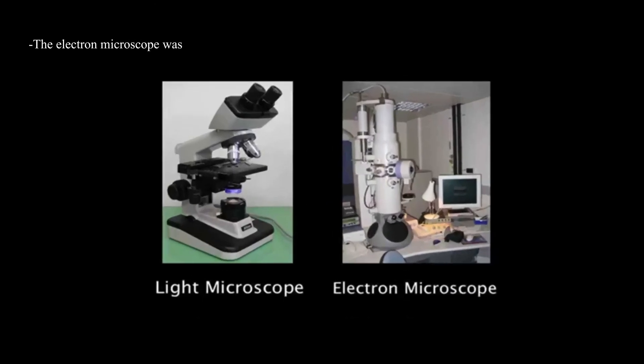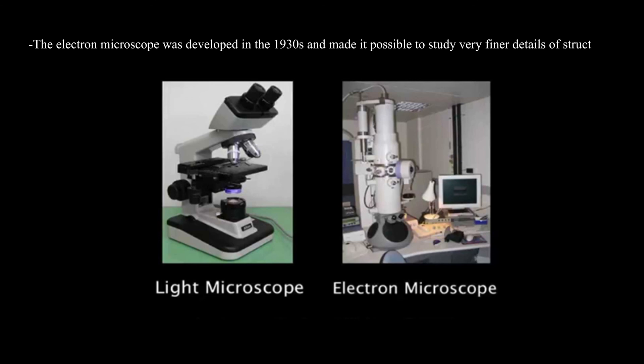The electron microscope was developed in the 1930s and made it possible to study very finer details of structures.